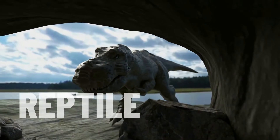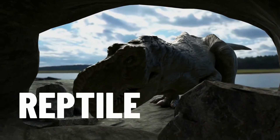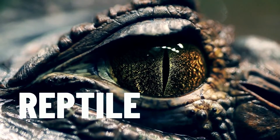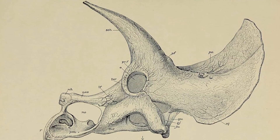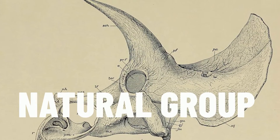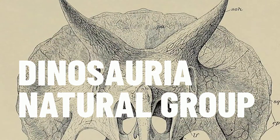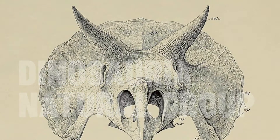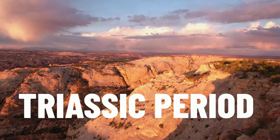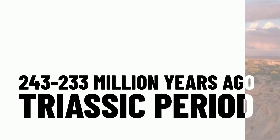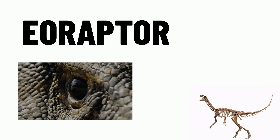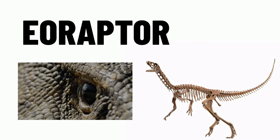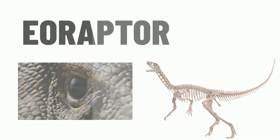Let's jump straight into our lesson with our first word: reptile. All dinosaurs are reptiles, and dinosaurs share common ancestors with all the reptiles that we have on the planet today. They are all part of a natural group of animals called Dinosauria. Dinosaurs first emerged in the Triassic period, about 243 to 233 million years ago. One of the earliest known dinosaurs is the Eoraptor, which was quite small — a little bit bigger than a chicken.